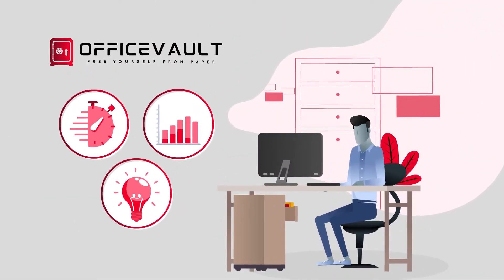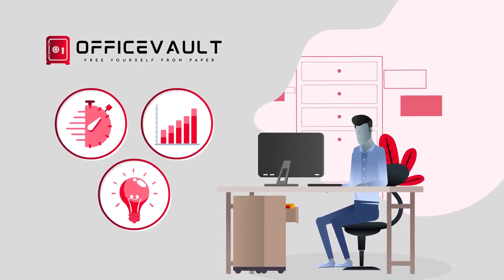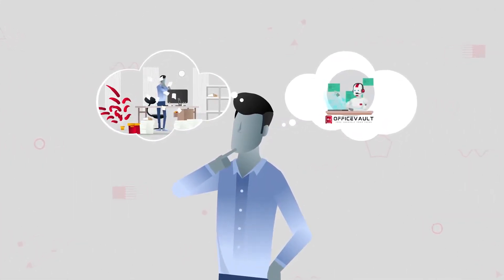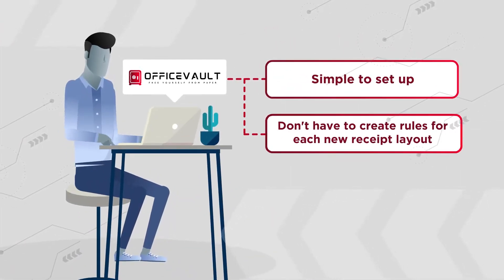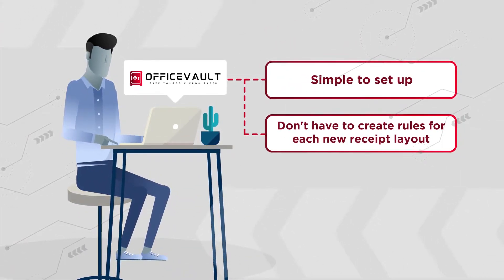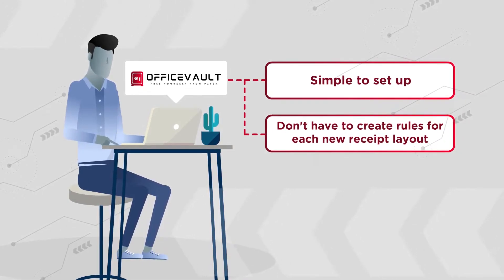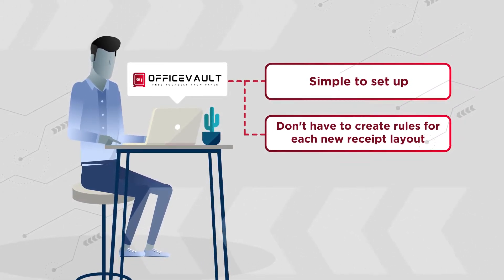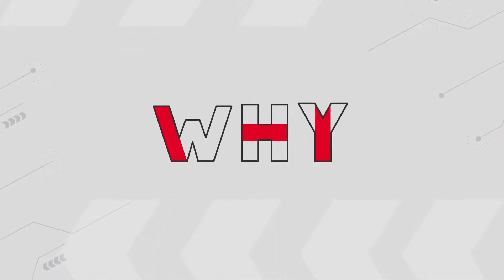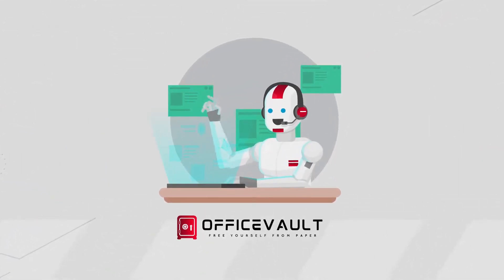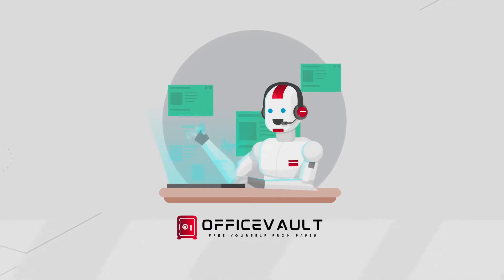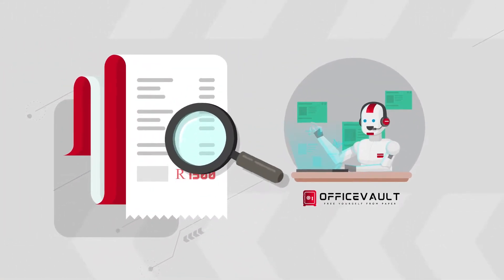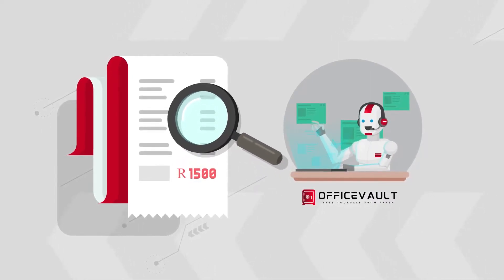We can help you save time, improve accuracy, and work smarter. So, what's the difference between our automated data capture engine? Unlike traditional OCR, the OfficeVault engine is simple to set up, and you don't have to create rules for each new receipt layout — just set and forget. OfficeVault is powered by artificial intelligence. So, even if the engine has never seen that vendor's receipt before, it can automatically pull the information required, including line items.